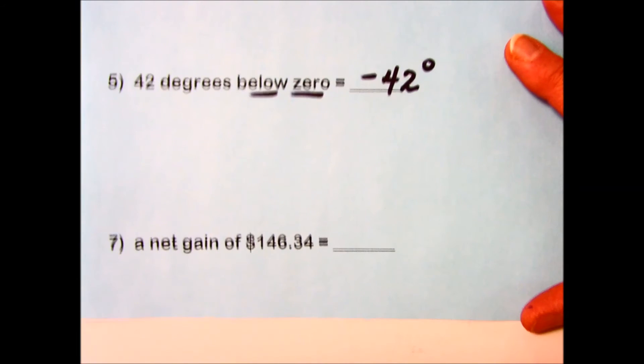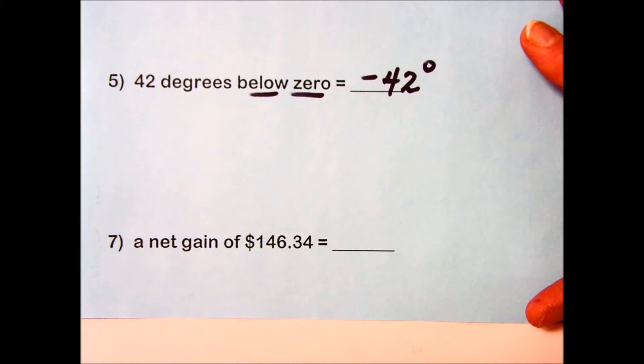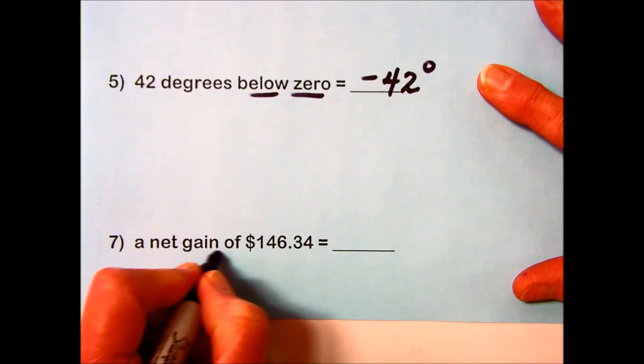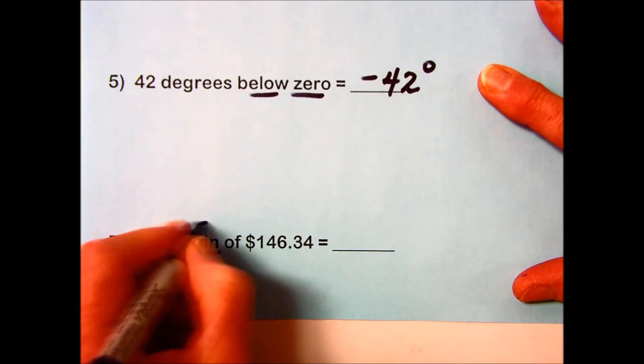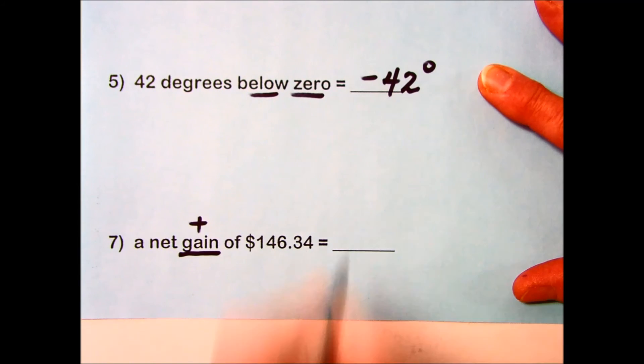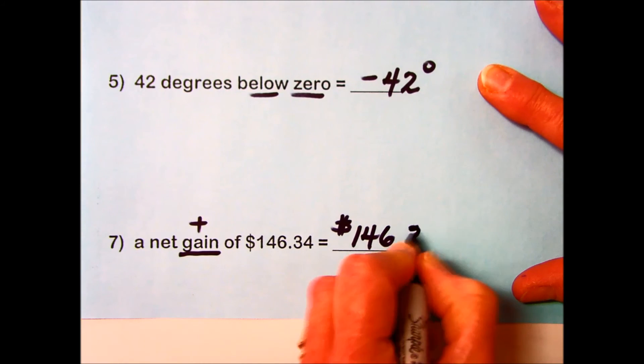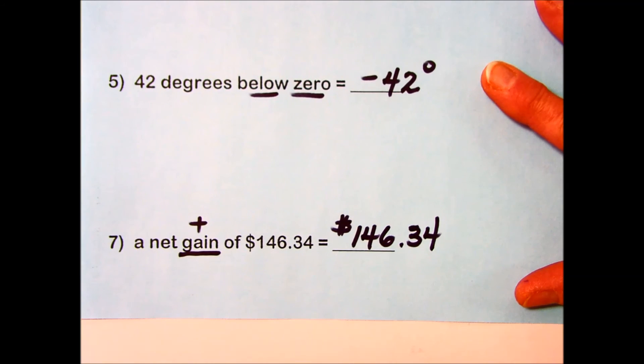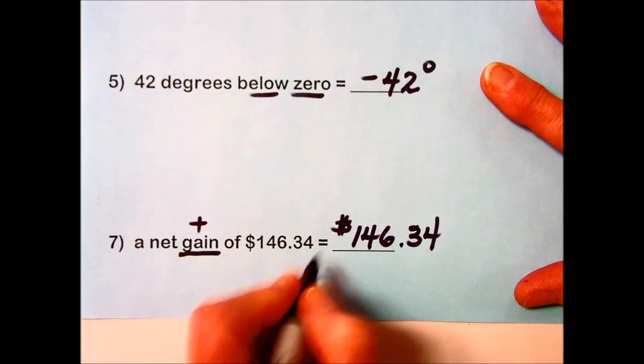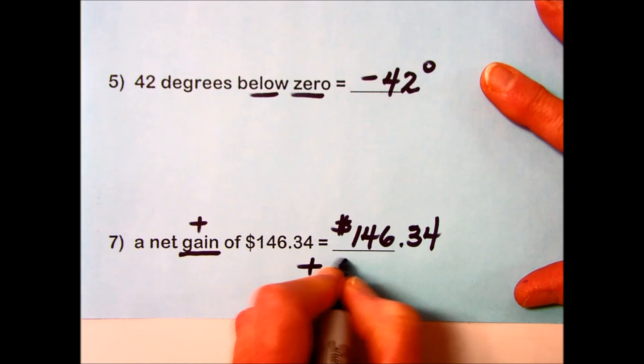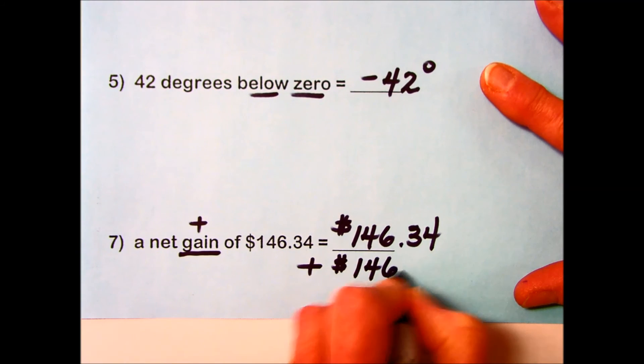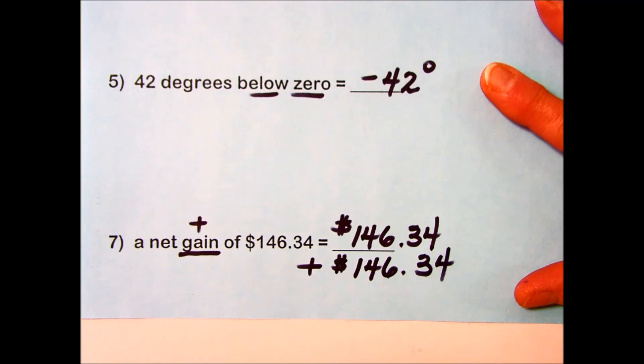The last example here is a net gain of $146.34. The key word that tells me the sign of this number is 'gain.' Gain indicates that it's positive, and I can either write this as $146.34, which I would suspect is the most common way without the sign. But again, if I want to emphasize that it is a positive number, I can put the plus sign in front of it: +$146.34.